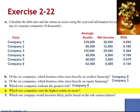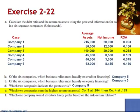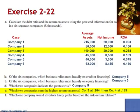Letter E asks: which two companies earn the highest return on assets? Company 3 has a return on assets of 0.264, then Company 4 at 0.189. A return on assets of 0.264 indicates that for every dollar of net assets invested, the company is able to generate $0.264 in net income.